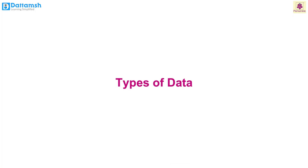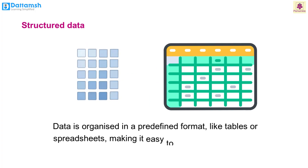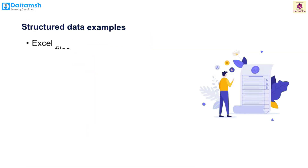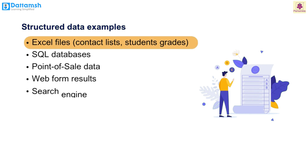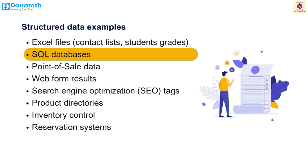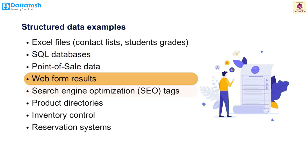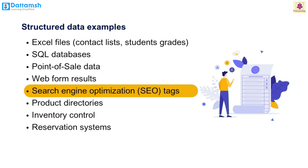Now let's learn about types of data. Structured data: data is organized in a predefined format like tables or spreadsheets, making it easy to search and analyze. Examples include contact lists and student grades in the form of Excel files, SQL databases, point of sale data, web form results, SEO tags, product directories, inventory control, and reservation systems.